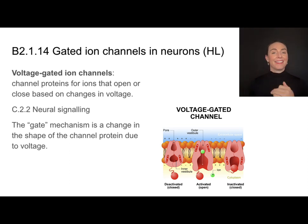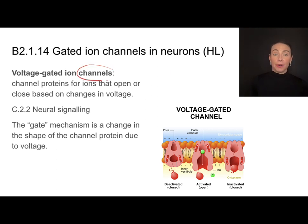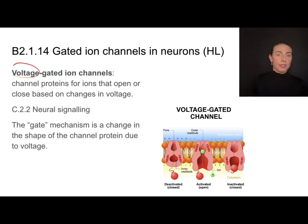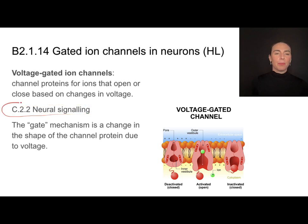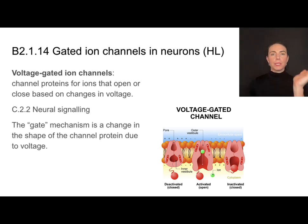One type of protein that can open or close is called a voltage-gated ion channel. It is a channel protein meant for moving ions either into or out of the cell that is going to open or close just like a gate based on changes in voltage. The gate is a mechanism — not really an actual gate, but a piece of the protein that kind of opens and closes when the protein changes shape.